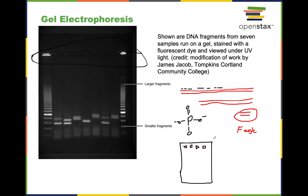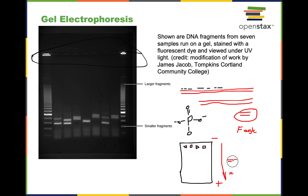When we apply the electricity, these DNA molecules move away from the negative charge toward the positive pole. Smaller ones will move faster, medium ones a little slower, and large ones will move really slowly. And that's how DNA gel electrophoresis is used to analyze DNA and separate it based on size.